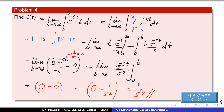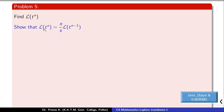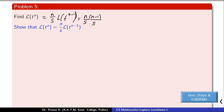Now, to find the Laplace transform of t raised to n, we first establish a recursive formula: L{t^n} = (n/s) times L{t^(n-1)}. Once we have this, we can apply it repeatedly — L{t^n} = (n/s) L{t^(n-1)} = n(n-1)/s² times L{t^(n-2)}, and so on — until we fully evaluate the Laplace transform of t raised to n, which we will do shortly.